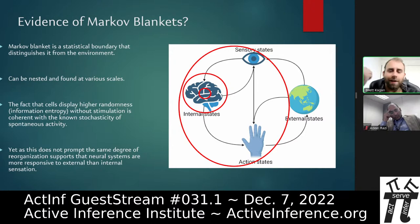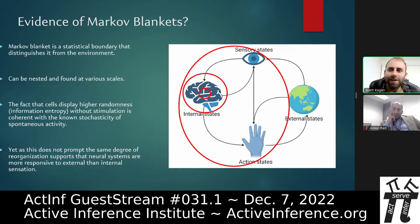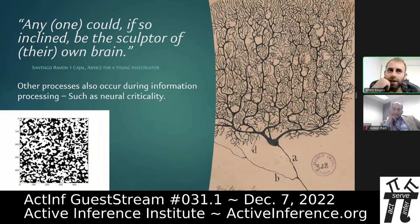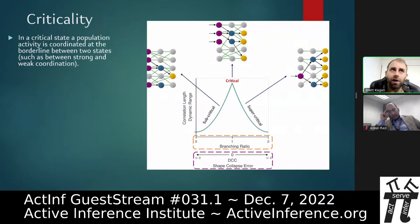A Markov blanket is a statistical boundary distinguishing an internal state from an external state, operable at any level — an individual neuron, a cluster of neurons, distinct functional brain regions, the whole brain, or the body in relation to the world. Even the simple notion that we can separate our internal thoughts from someone's external voice to us suggests we need some sort of barrier to distinguish internally versus externally structured information. Seeing this in our cultures was very exciting.